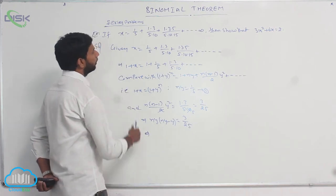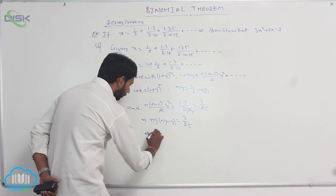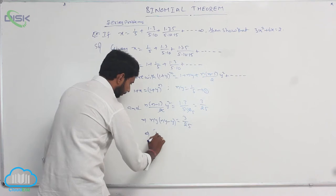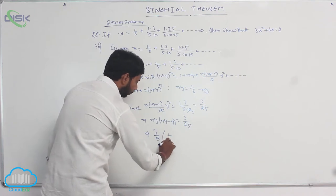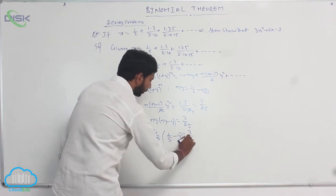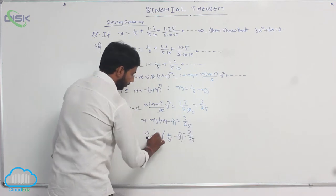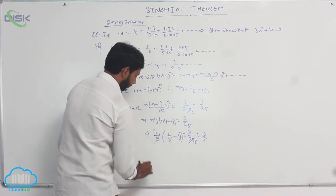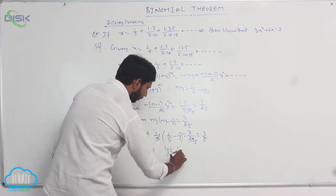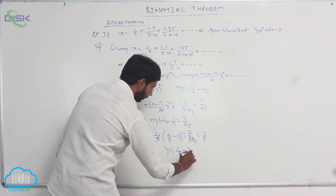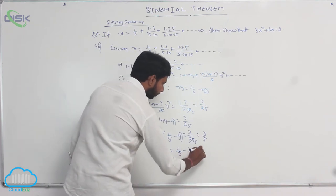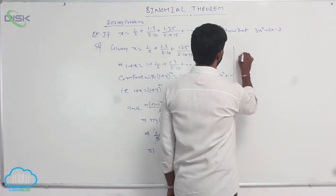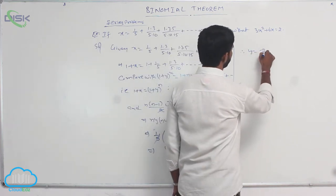Here ny = 1/5, so substituting: 1/5 · (1/5 − y) = 3/25. After cancellation, 1/5 − y = 3/5. Therefore y = 1/5 − 3/5 = −2/5. The value of y is −2/5.